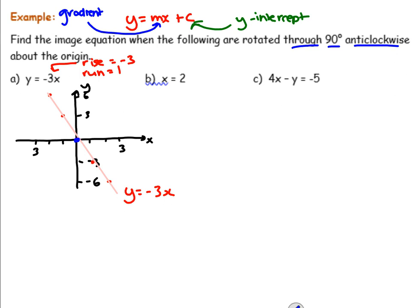So what you've got to think is: if I took one of those points and I rotated it 90 degrees in an anticlockwise direction, where would it end up? I'm going to do this in purple because we're about to see the image line. The point at negative 1 and 3 — I'm going to try rotating that. Where's it going to end up? It's going to end up at about 3 and 1. So negative 1, 3 is going to end up at the coordinate 3, 1.